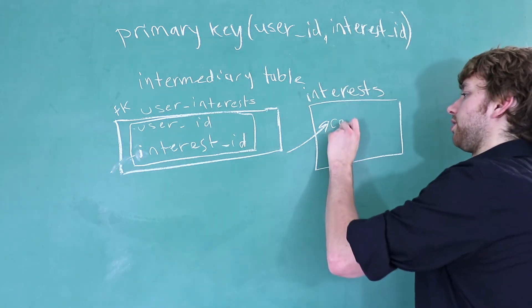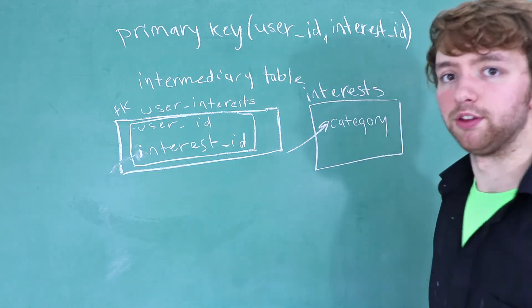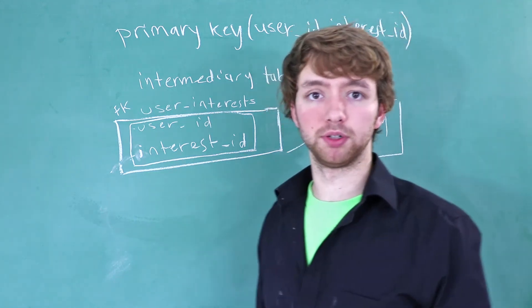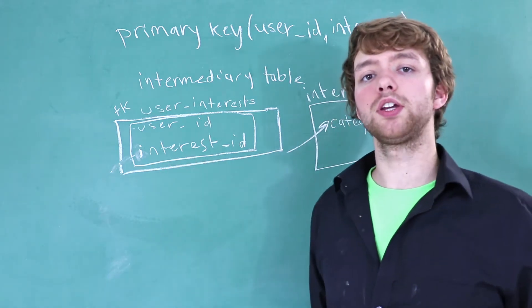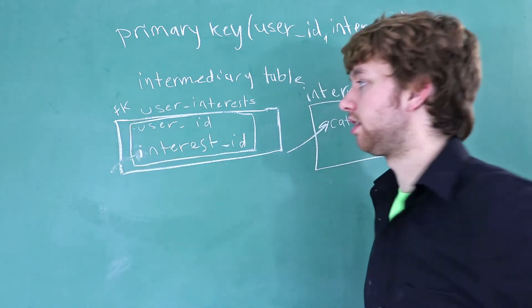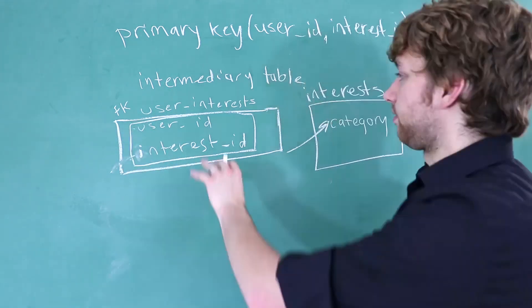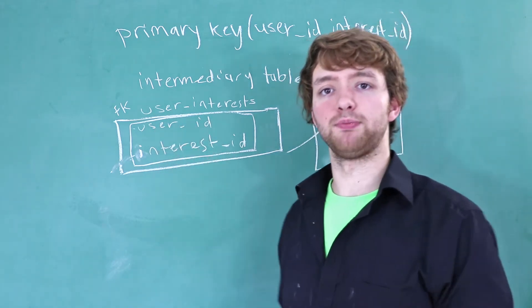So we fixed our problem here. Now this interest is going to have a category, which, you know, that could be referenced from another table, like a category table, if we really wanted. So what kind of columns can we put in this table legally? Only columns that depend on both of the primary key pieces. So for example, if you recorded when this association between a user and an interest was started.